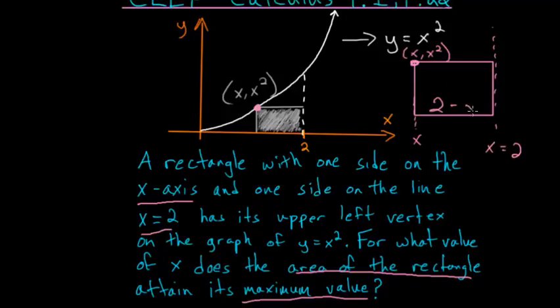So it would be 2 minus x, and the height of this rectangle would just be x squared since the y value up here is x squared and down here this is the x-axis, so y equals 0 down here.